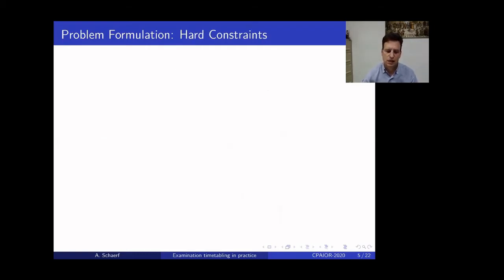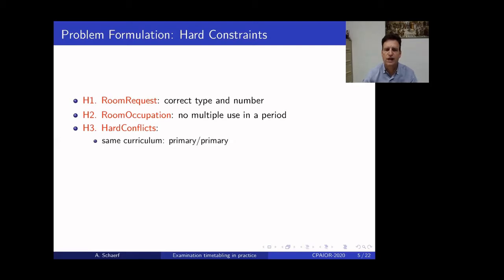Okay, so now let's go more in detail into hard and soft constraints. So, obviously, the first one is that the room request should be of the correct type and number, that two rooms cannot be occupied by two exams in the same period. Then we have the hard conflicts between events, so if they are in the same curriculum and they're both primary, so there is a hard conflict, if they have the same teacher. And then we have precedences, so events belonging to the same course have a strict order, so the written is before the oral, and the oral is before the written of the next exam, and so on. And then we have some unavailabilities.